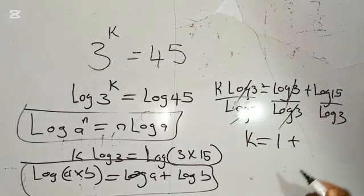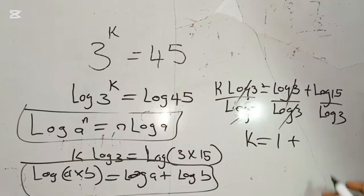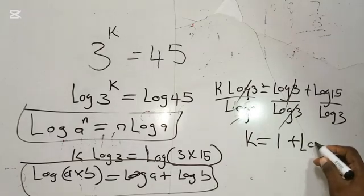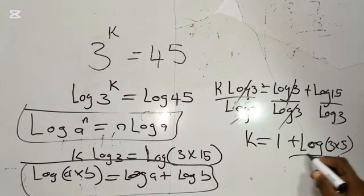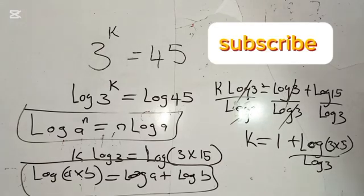Don't forget, we can simplify this further by saying log 15 is equal to log 3 times 5, all divided by log 3.